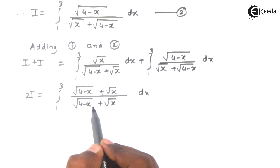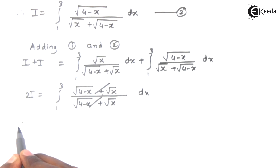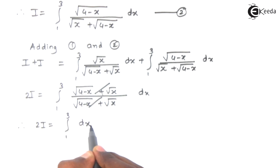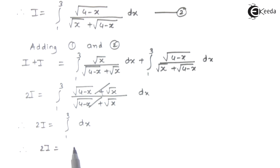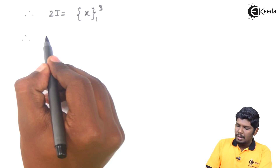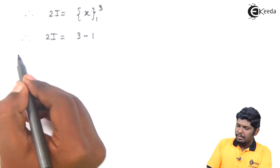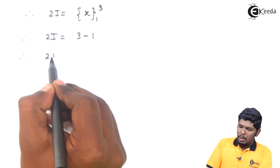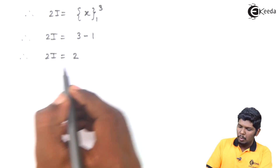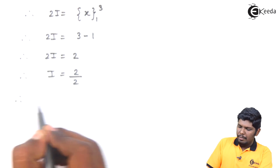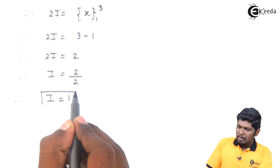Here both the numerator and denominator are the same, so they cancel. Therefore 2i equals integral 1 to 3 dx. The integration of dx is x. Therefore this gives x within limits 1 to 3. Replacing x by the upper limit 3 minus the lower limit 1: 2i equals 3 minus 1, which equals 2. Therefore i equals 2 over 2, so i equals 1. This is our final answer.